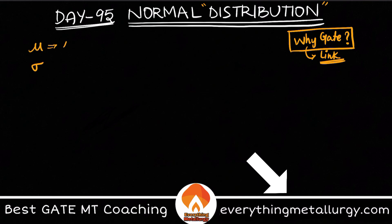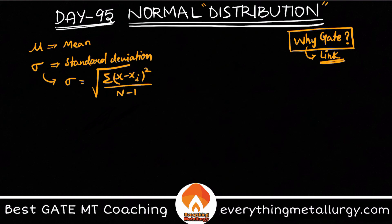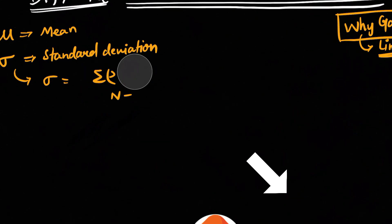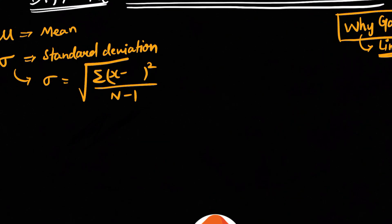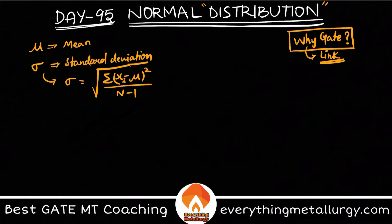Mu is nothing but the mean of the data, and sigma is the standard deviation. The formula for sigma is the square root of the sum of (x_i minus mu) squared, divided by (n minus 1). We use standard deviation to explain deviations of the data at different places.